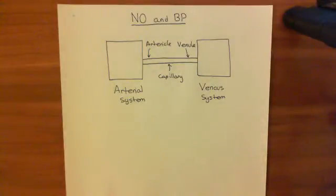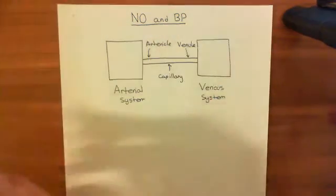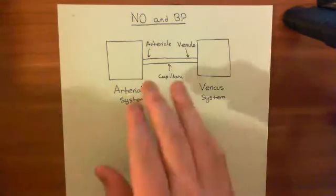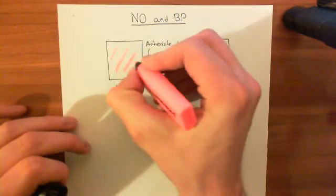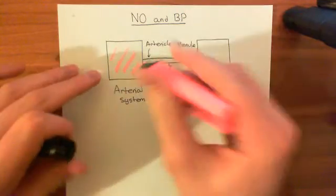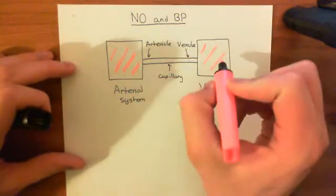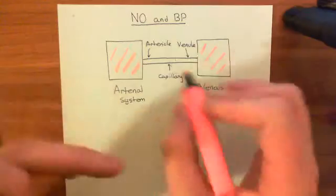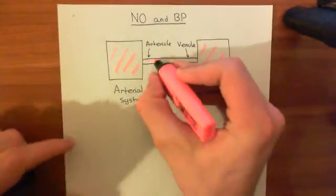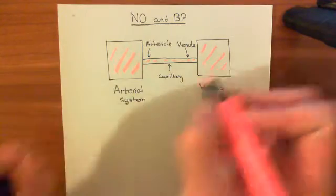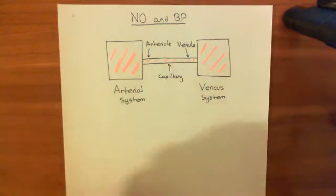Now the basic hemodynamic model is this. Let's say originally we start off with blood in this entire system and we leave it completely in equilibrium. The pressure of the arterial system is going to be equal to the pressure of the venous system, and you're going to have no net flow through this tube, because the pressure of both systems is going to be equal to one another.